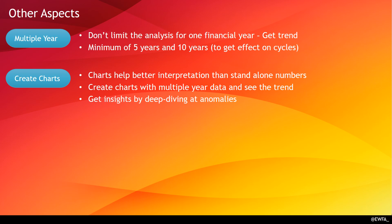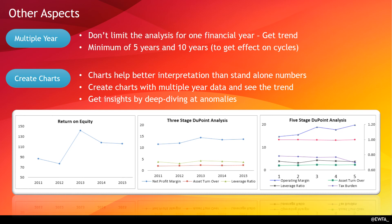Third, get insights by deep diving into anomalies. For example, looking at an ROE trend, if there is a dip in 2012 and a spike in 2013, do a DuPont-style analysis and find that net profit margin was fluctuating those two years. Don't stop there — deep dive into the 2012 annual report to find what caused the net profit margin to dip, and the 2013 report to find what caused it to increase. Was the cost of materials fluctuating? Something will come out when you deep dive.